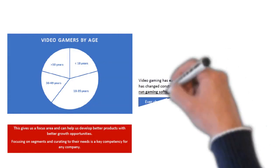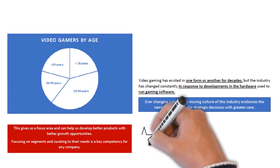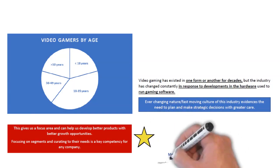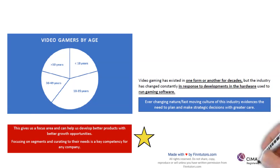A graph showing segmentation by age indicates that the majority of game players are between 18 and 35, with a roughly equal distribution between 36–49, under 18, and over 50. The major market segment is 18 to 35. This customer and market segmentation — part of E3 — gives a focus area and helps develop better products with better growth opportunities by curating to specific needs.